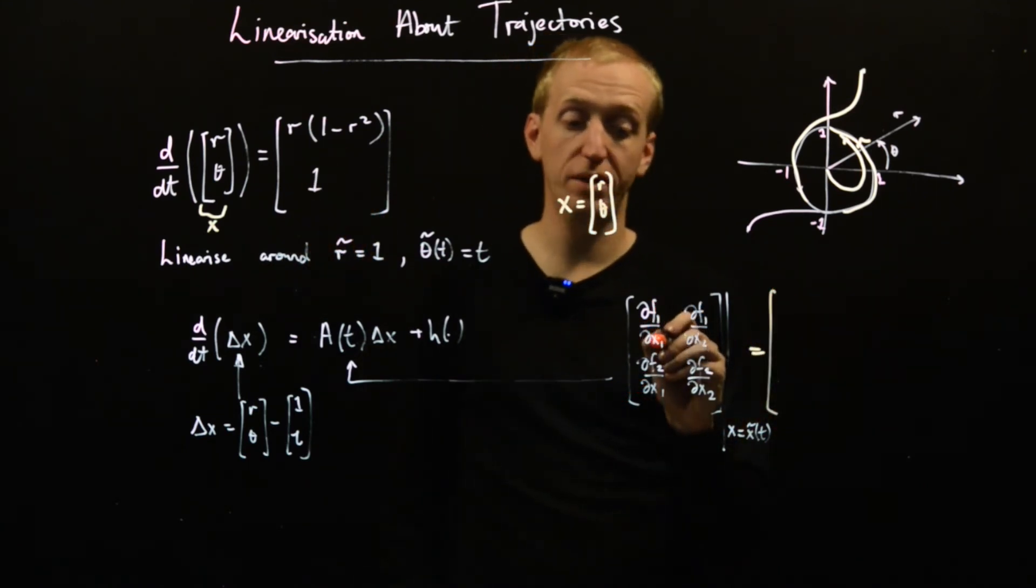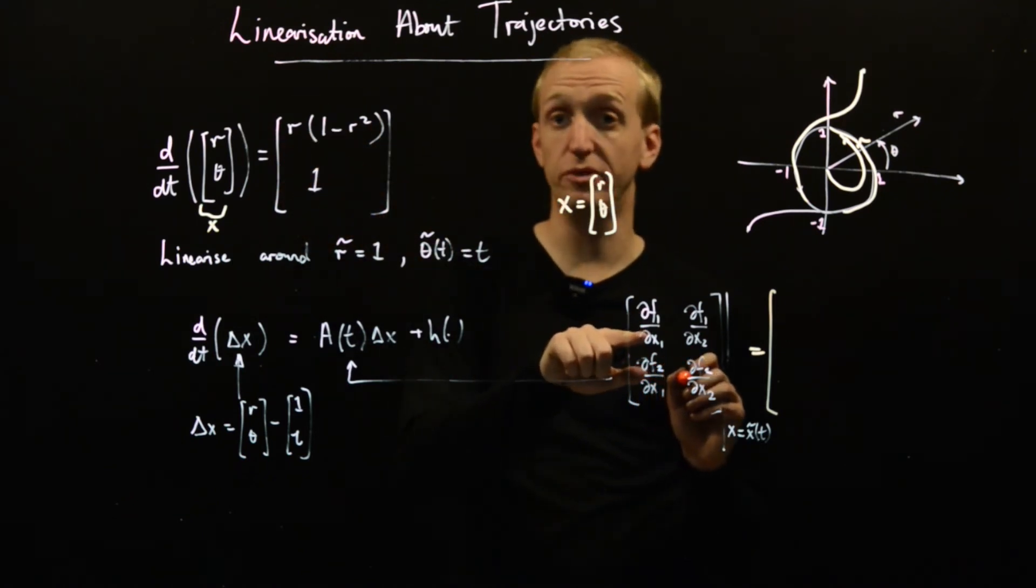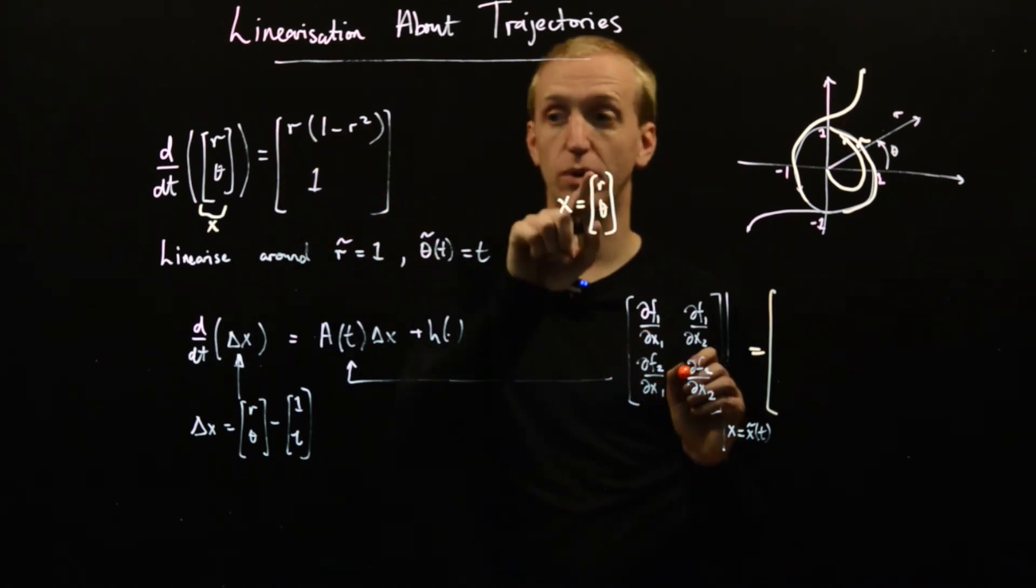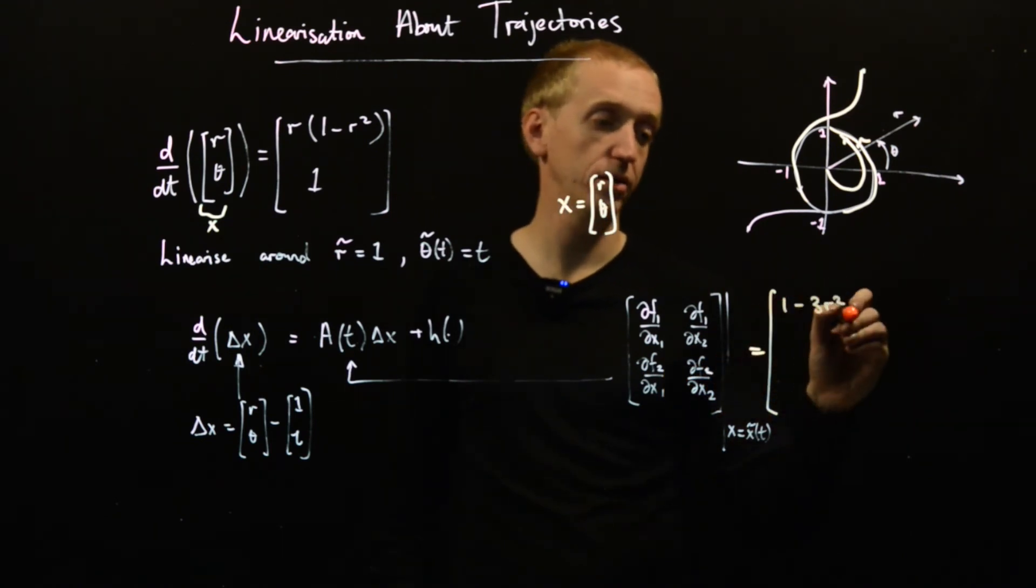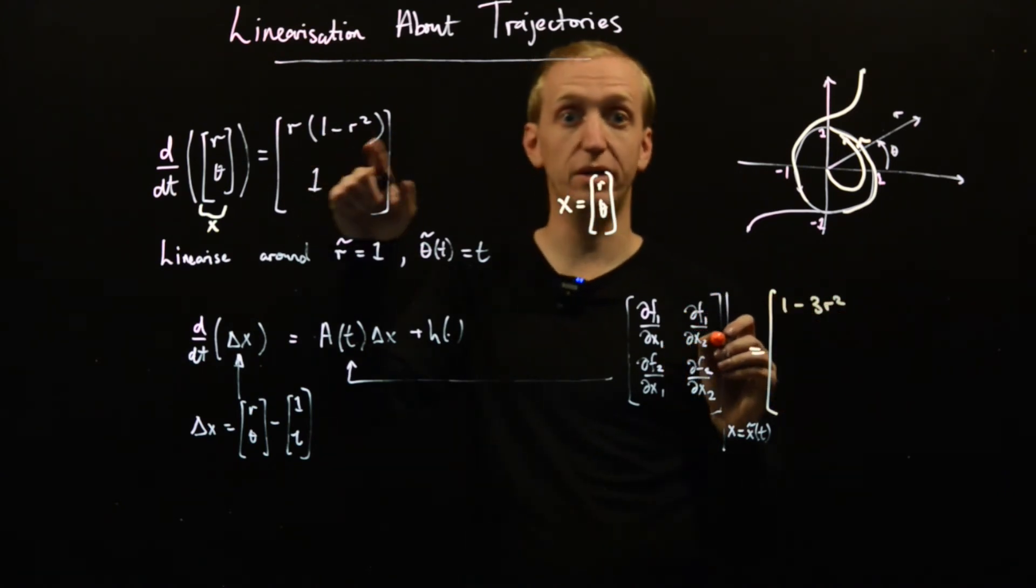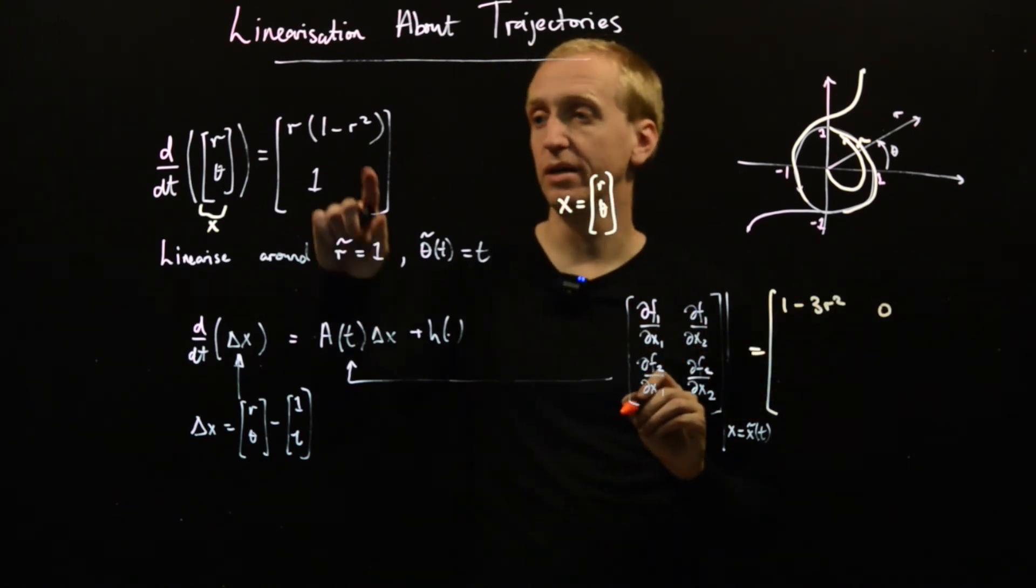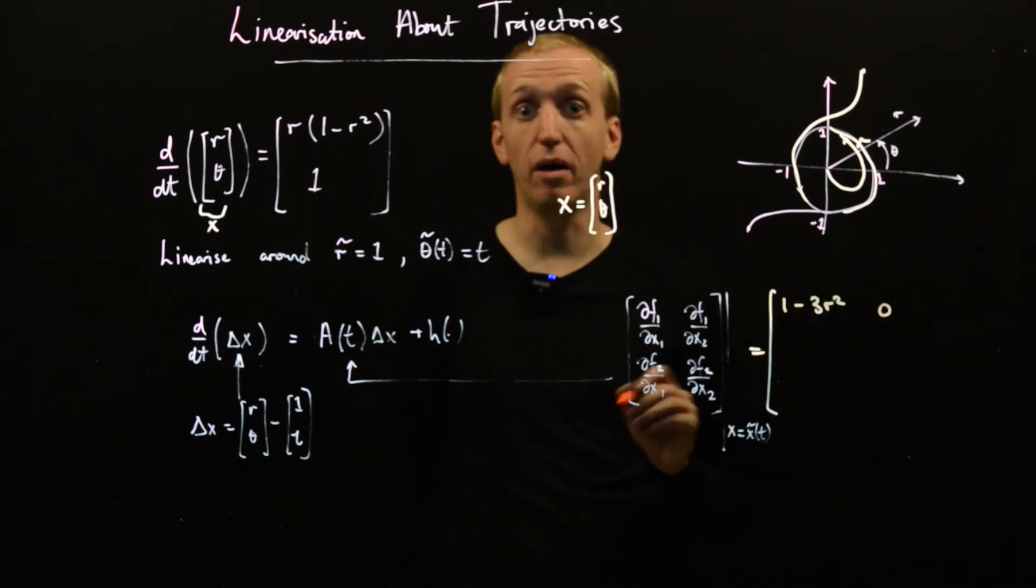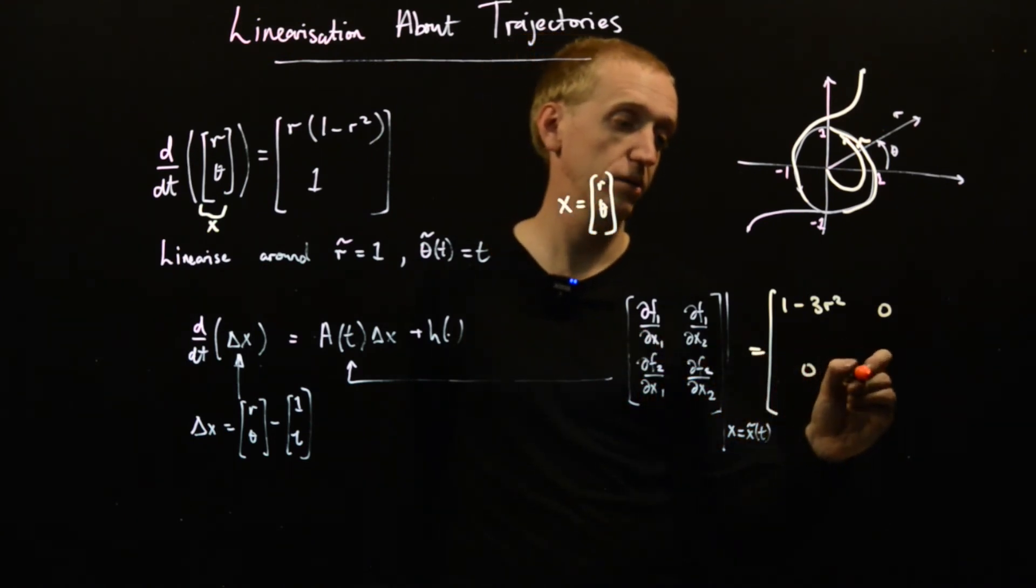So df1/dx1, that's this function, the partial derivative with respect to x1, which is r. So we get 1 minus 3r squared. Now we need df1/dx2. This doesn't depend on theta though. x2 is theta, so that's zero. And similarly, this doesn't depend on either of our state variables. So when we take the partial derivatives, we get zero, zero.